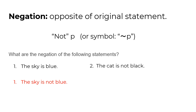If the statement is 'the cat is not black,' what would the negation be? You just take out the 'not,' so the negation is 'the cat is black.' Again, you can't say the cat is another color — the negation is simply 'the cat is black.' So those are your conditional statements and negations. Stay tuned for the next video, where we're going to be talking about converse, inverse, and contrapositive statements.